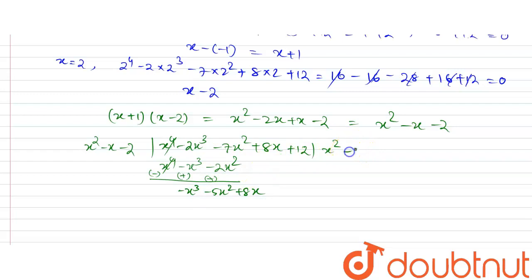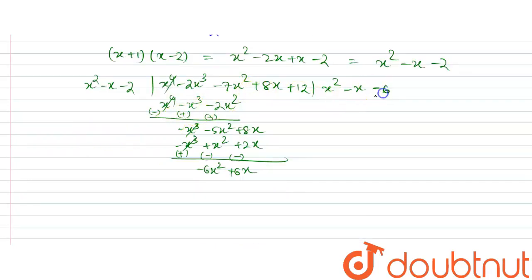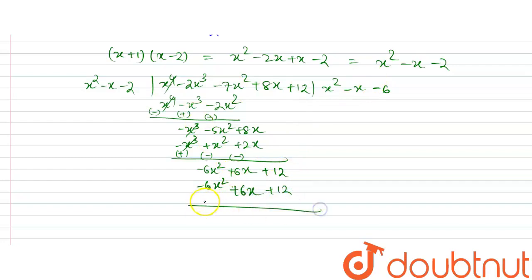The next term in the quotient is minus x. Then minus x times x² is minus x³, minus x times (minus x) is plus x², and minus x times (minus 2) is plus 2x. Subtracting: x³ cancels, minus 5x² minus x² gives minus 6x², and 8x minus 2x gives plus 6x. Now taking minus 6: minus 6 times x² is minus 6x², minus 6 times (minus x) is plus 6x, and minus 6 times (minus 2) is plus 12.